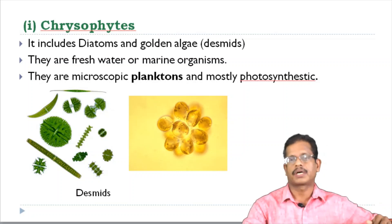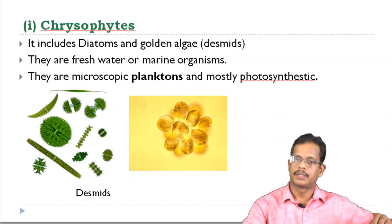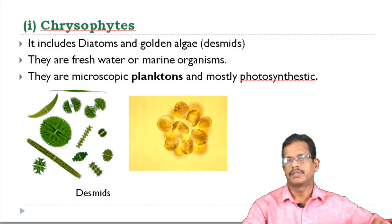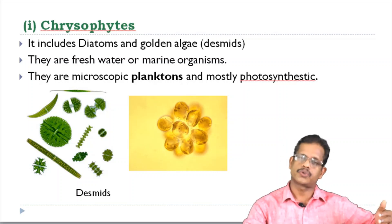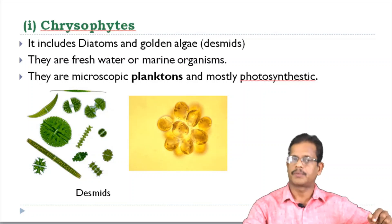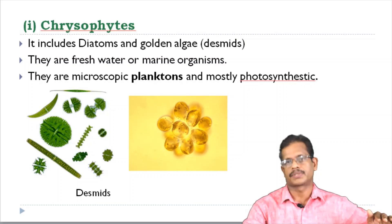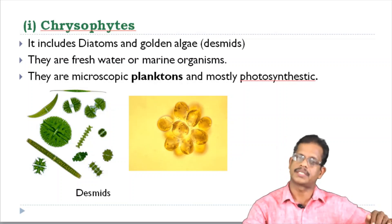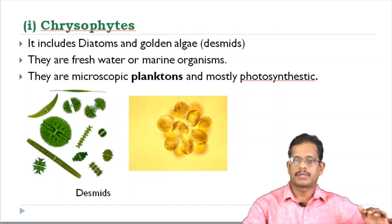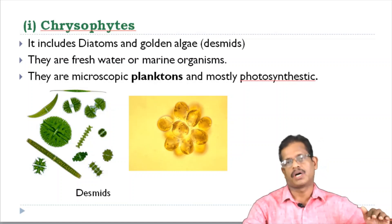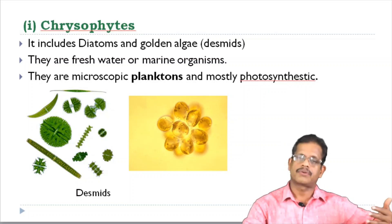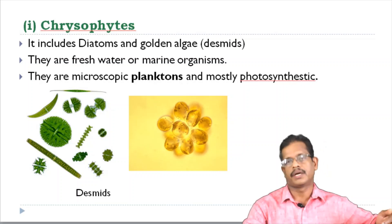They are called Golden Algae. They are fresh water or marine — fresh water or sea water. They are microscopic, and they are planktons, because they are microscopic organisms in the water. They are free-floating organisms in the water. Microorganisms floating on the surface of the water are called planktons.